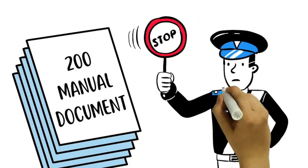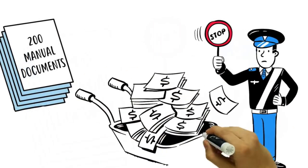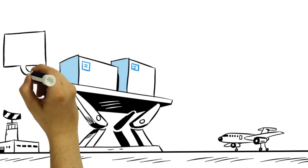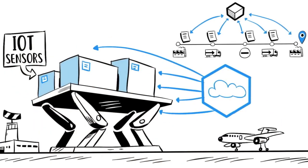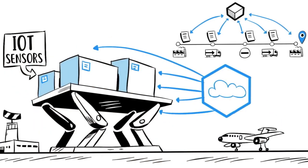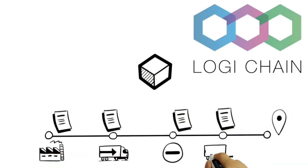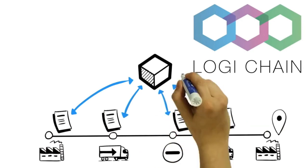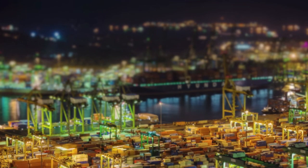One of the most difficult areas in logistics is the transportation of perishable products and pharmaceutical articles. These areas are complicated by the fact that logistics companies have to come up with ways to minimize the time of product delivery to the final consumers.